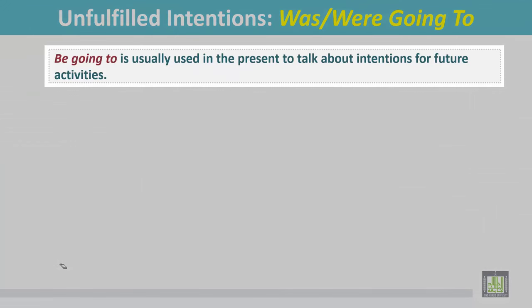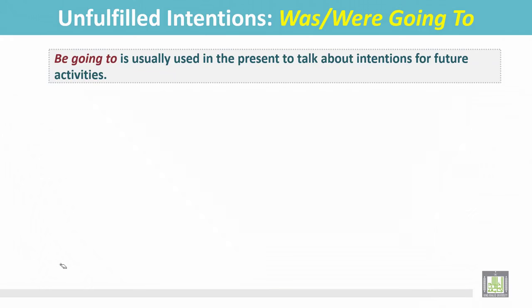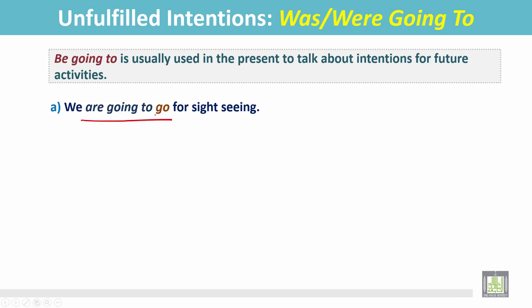Be going to is usually used in the present to talk about intentions for future activities. See the examples: 'We are going to go sightseeing.' Our plan is to go sightseeing — it means we will go sightseeing. This expresses our intentions for future activities.